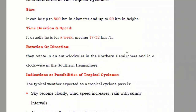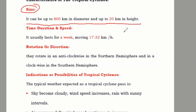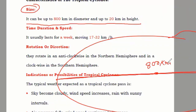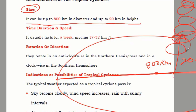Now they're discussing the characteristics of a tropical cyclone. The first characteristic is size — a tropical cyclone can be up to 800 kilometers in diameter. If you see the diameter, that's from one side to the other. And if you see the height in the air, it can be up to 20 kilometers, meaning the air spiral goes up to 20 kilometers above.